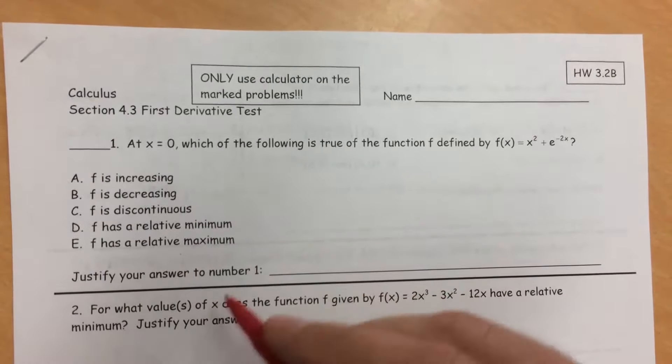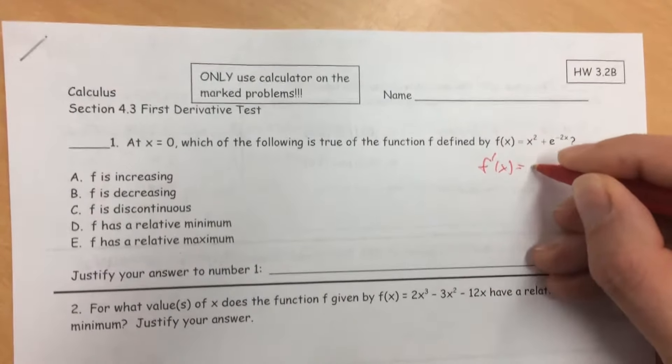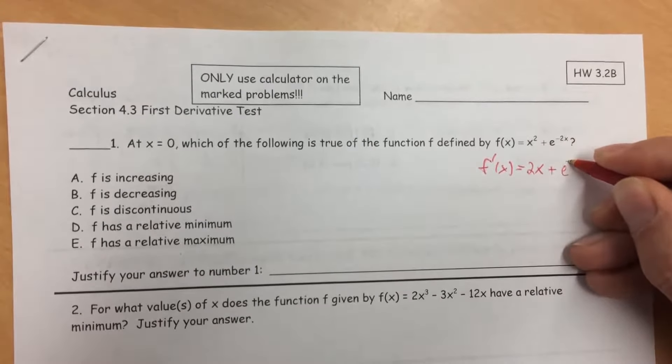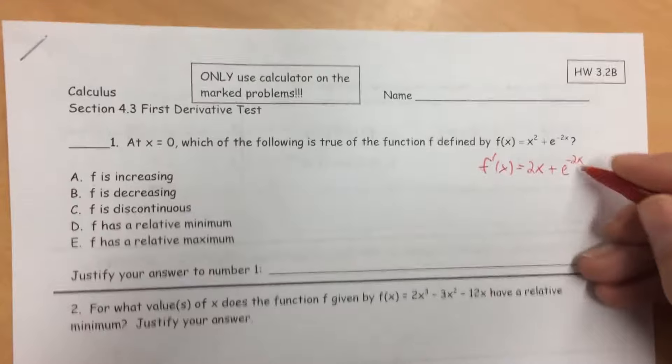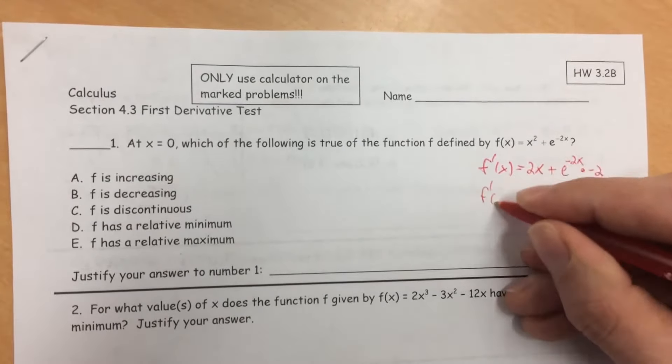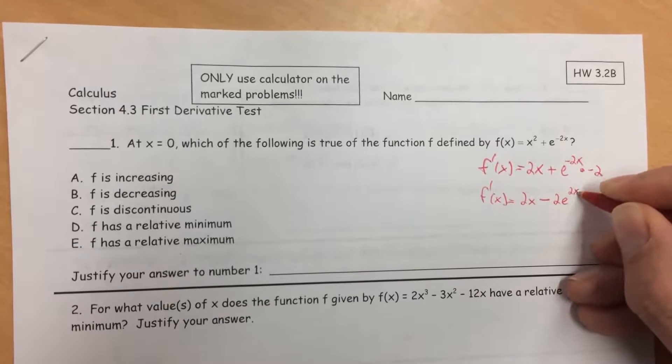f'(x) equals, by the power rule, 2x. Here we've got a chain rule. It's going to be e^(-2x) times the derivative of -2x, which is -2. So f'(x) equals 2x minus 2e^(-2x).